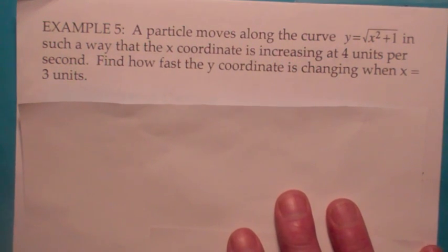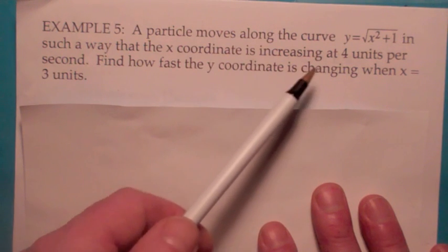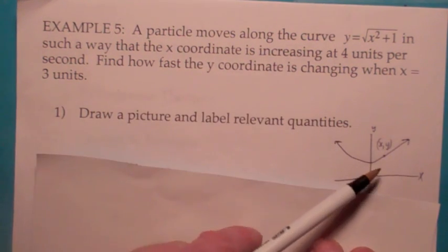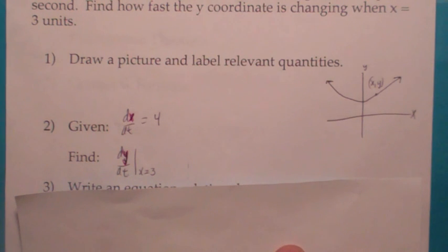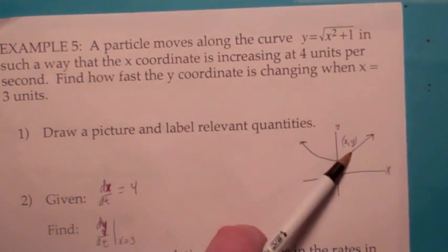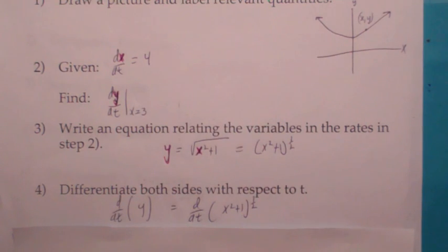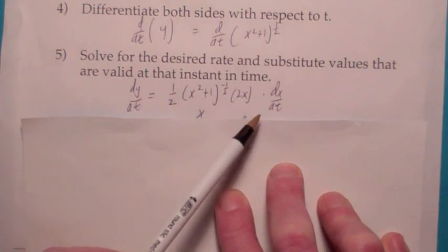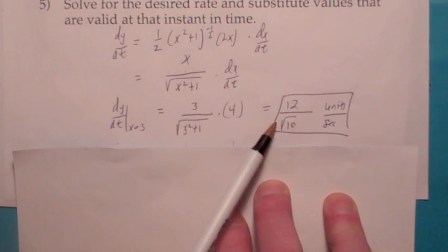This last one: a point is moving along the curve y equals √(x² + 1) in such a way that the x coordinate is increasing by 4 units per second — that's dx/dt. They want to know how fast is the y coordinate changing when x equals 3. They're giving us dx/dt equals 4, and they want us to find dy/dt when x equals 3. The relationship between x and y is the equation itself, since the point lies on the curve. Differentiate both sides with respect to t: you get (1/2)(x² + 1)^(−1/2) times 2x times dx/dt. Plug in x equals 3 and dx/dt equals 4, and you end up with 12/10 units per second.